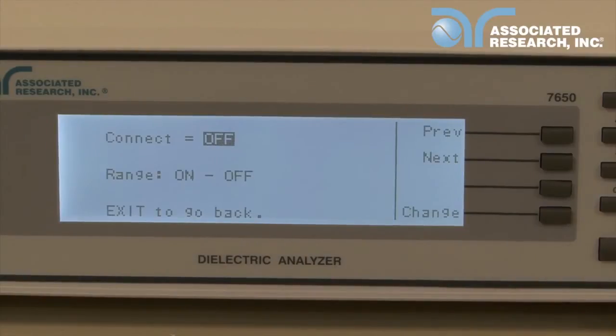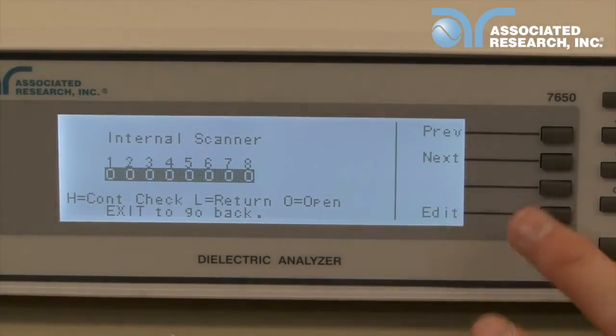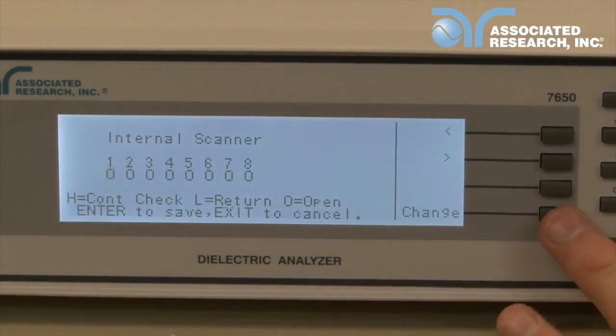If you have an instrument with built-in scanner channels, you'll also notice the scanner setting on the parameter screen. To edit the channel settings, use the arrow keys to select a channel and use the change key to toggle between high, low, or open.